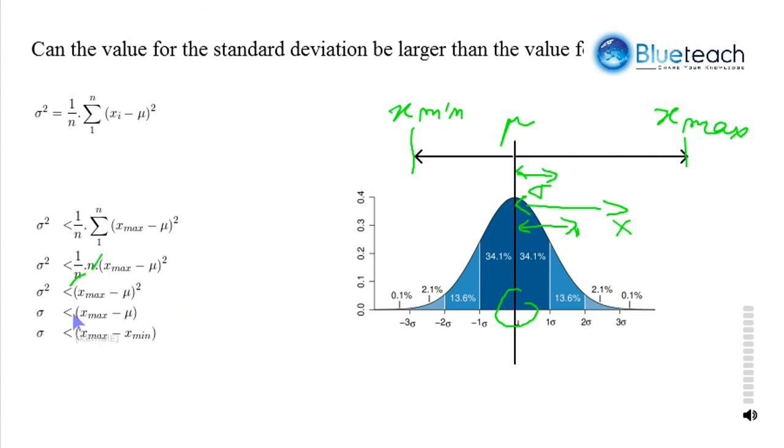And we get sigma, this distance, is smaller than this distance. So, it's also smaller than the larger distance, that's the range. So, x max minus x min, which is what we wanted to demonstrate.